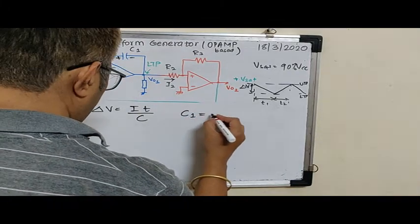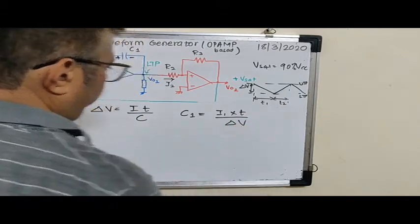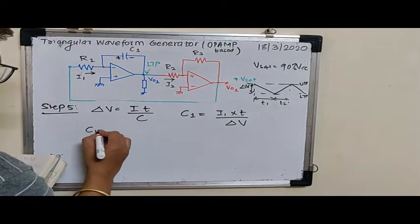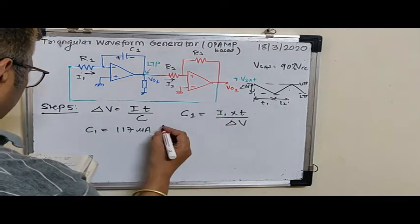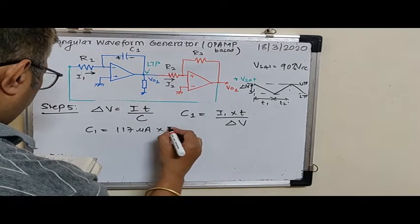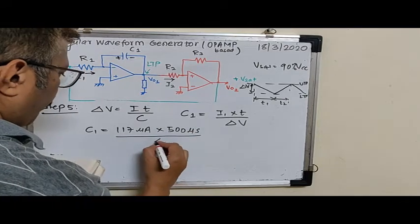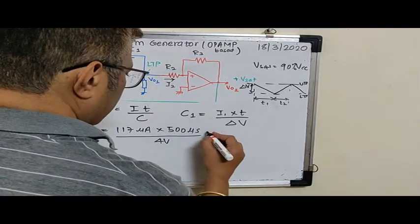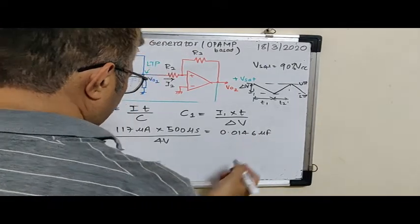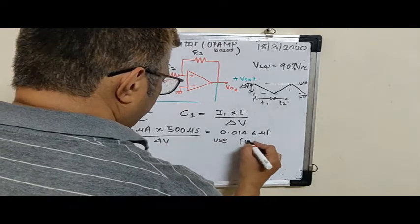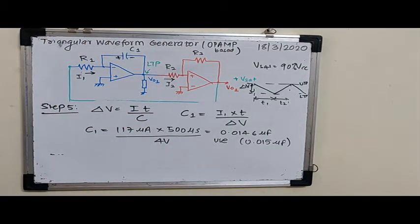C1 is I1 into T divided by delta V. So using this, C1 equals 117 microA, and please don't forget I1 is different, we have recalculated it, into 500 microseconds divided by 4 volts. This turns out to be 0.0146 microfarads. Not a standard value, so we will use the standard value 0.015 microfarads.